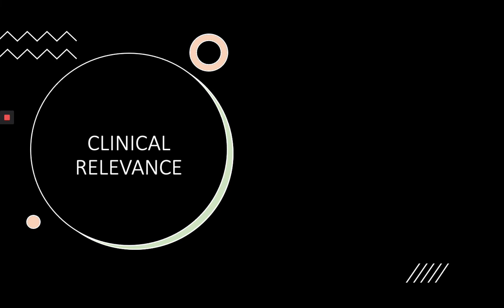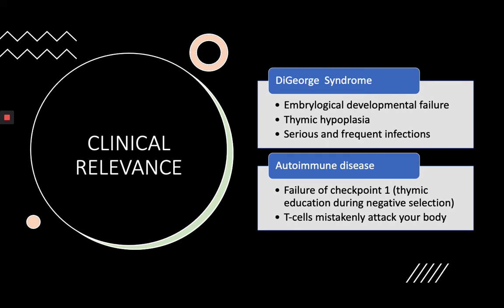Regarding clinical relevance: DiGeorge syndrome involves a deficiency in T lymphocytes. This occurs because during fetal development, the embryological structures from which the thymus arises fail to develop, leading to thymus aplasia — meaning the organ is absent — or thymus hypoplasia, meaning the organ tissue is decreased. The lack of a functional thymus means affected children have reduced or absent T lymphocytes and are very susceptible to infections, including fungal and parasitic infections, which are frequent and severe.